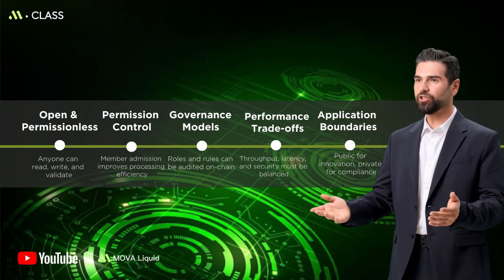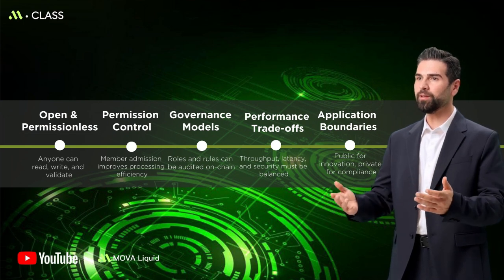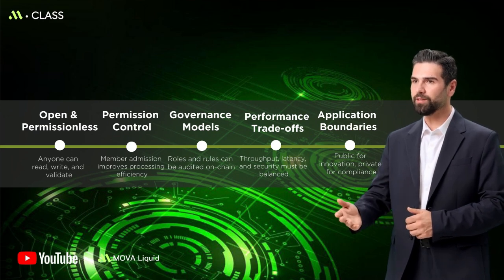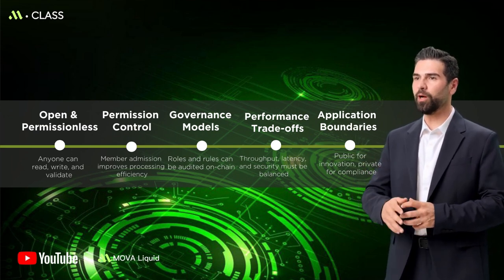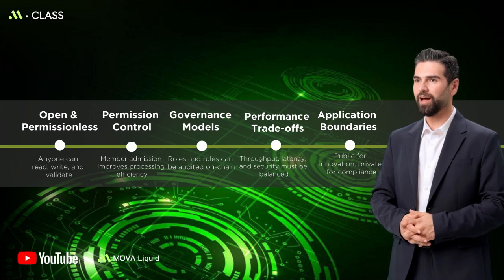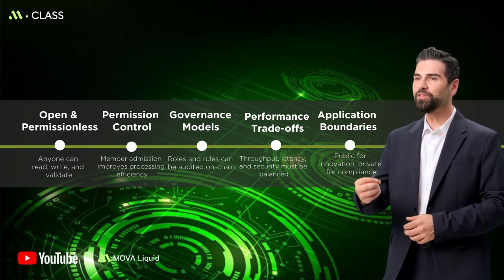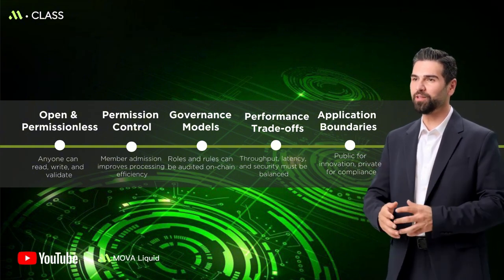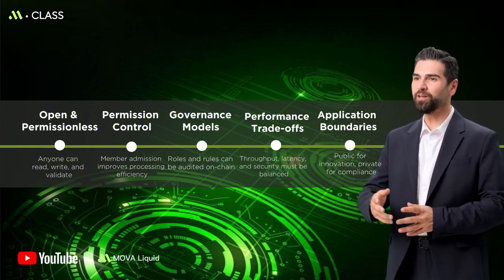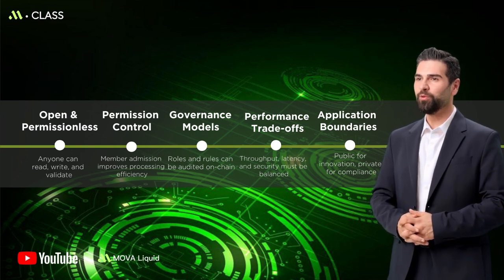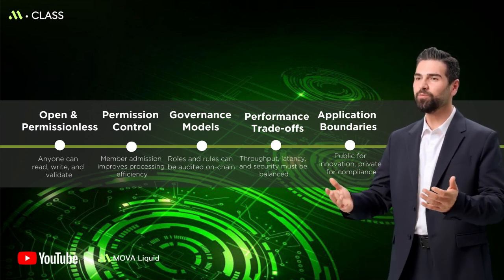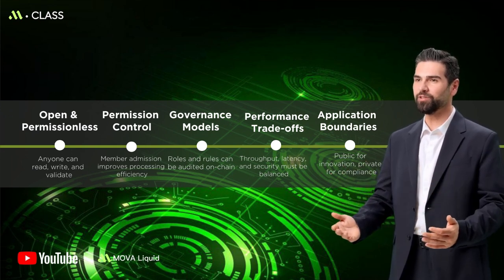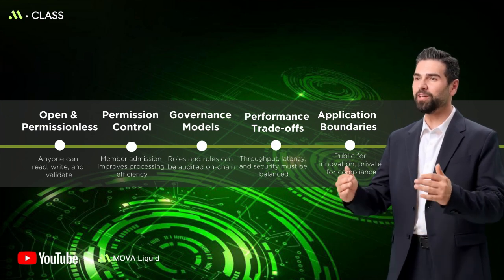Connect the implementation path into a closed loop. First, define what business data must be public versus private. Put public components on public chains for verifiability and composability. Place sensitive processes on private chains to meet internal control and compliance requirements. Use cross-chain mechanisms or middleware to synchronize only the minimum necessary trusted information. Then evaluate throughput, latency, cost, and compliance evidence with measurable indicators.